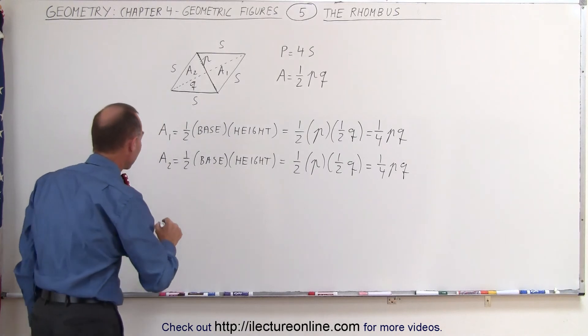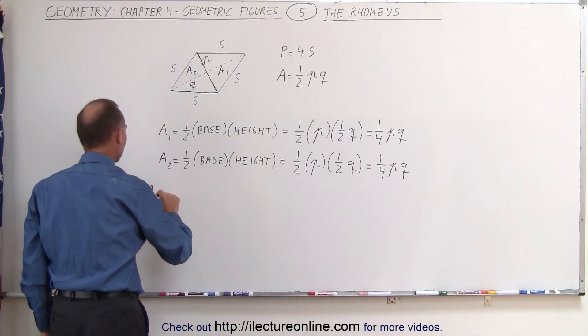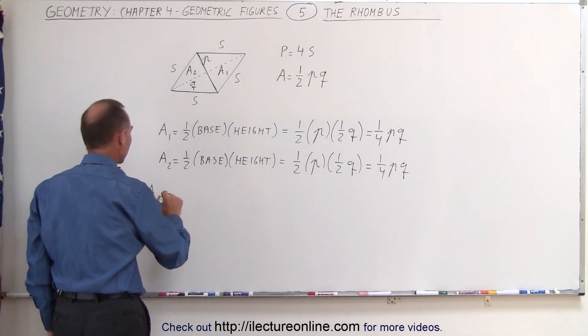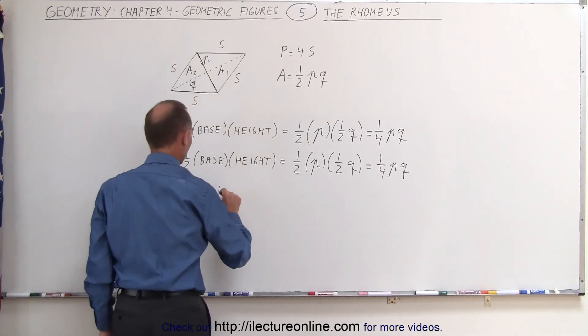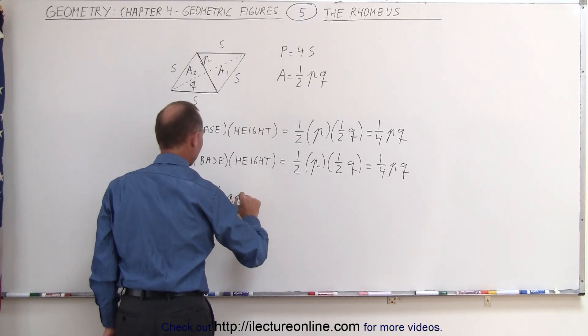If we now add both of those areas together, we now say that the area of the rhombus, I'll call it A sub R, is simply equal to the sum of the two areas of the two triangles, which is equal to one-quarter P times Q,